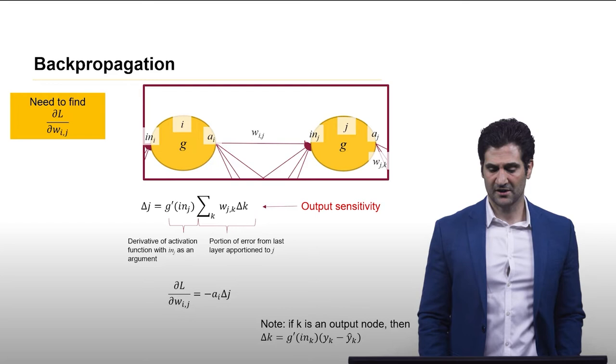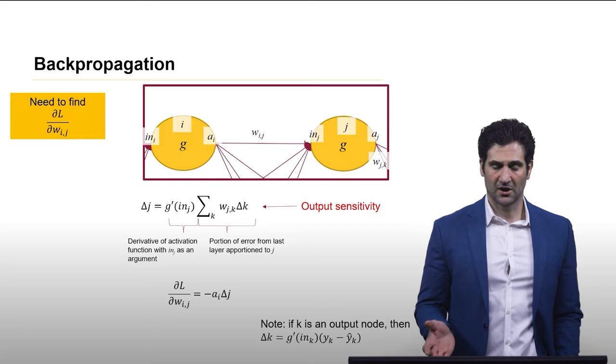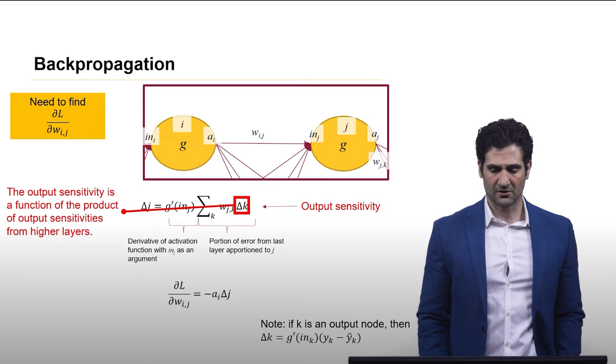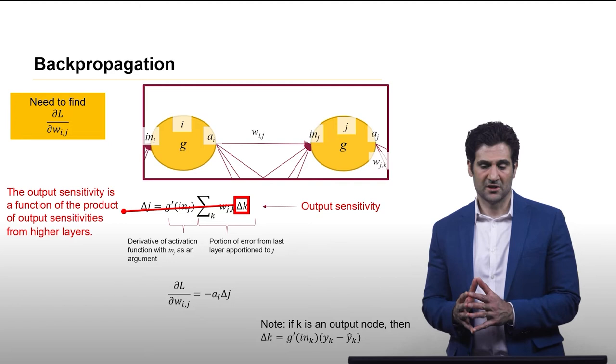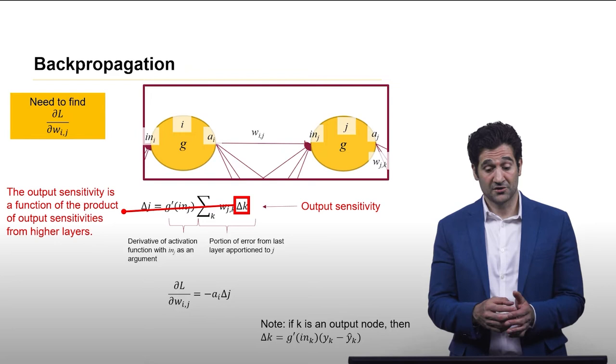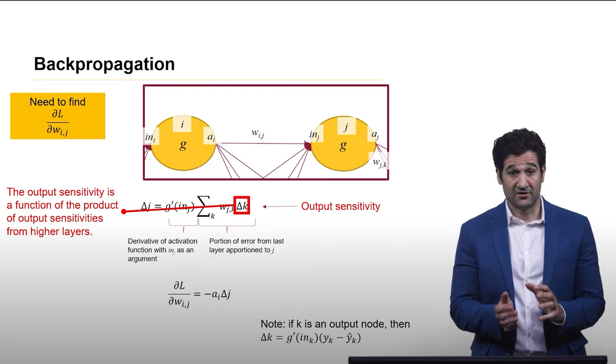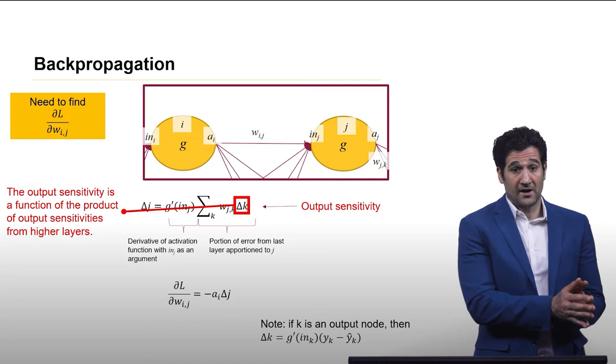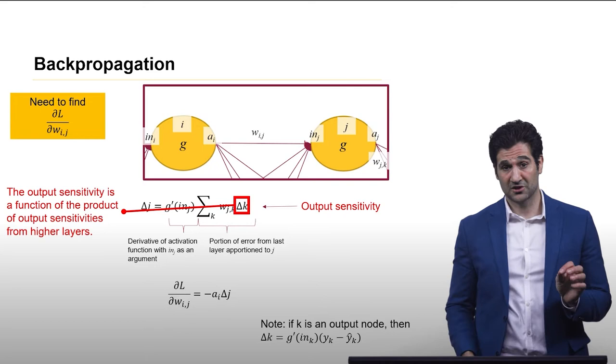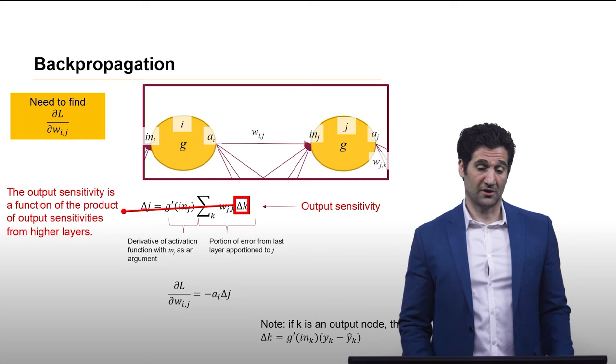Now, the thing to see in here is that we are multiplying. We have a product of the output sensitivity from the previous layer. And so as the output sensitivity, if it's very small, and then, say, your previous weights are also very small, then what's going to happen is the output sensitivity at layer J will be even smaller still. And as you go downward and downward, it's going to, at some point, be a number that is so small, the computer will automatically set it to zero.